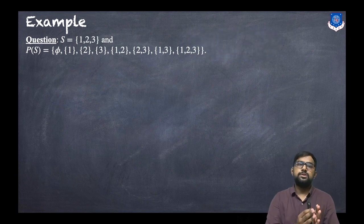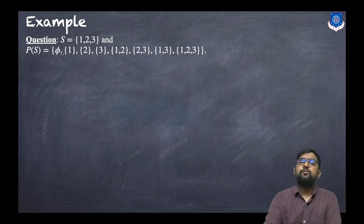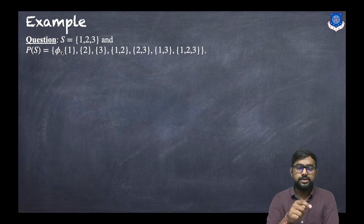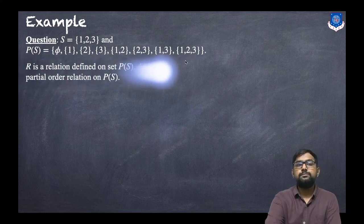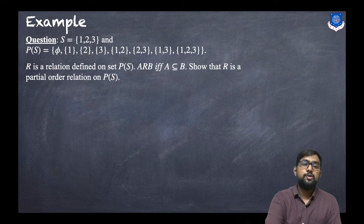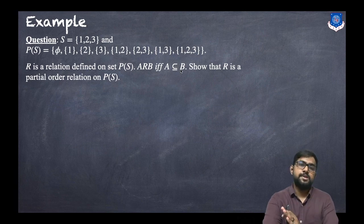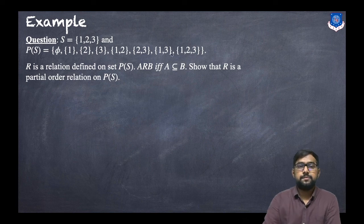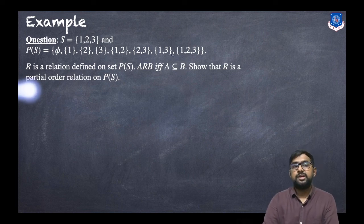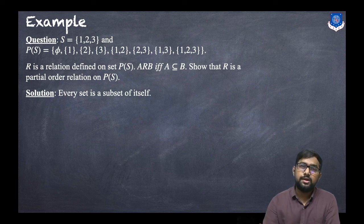The next example: let S = {1, 2, 3} and P(S) be the power set of S. P(S) contains 2 raised to 3, that is 8 elements: the empty set, singletons {1}, {2}, {3}, then {1,2}, {2,3}, {1,3}, and {1,2,3}. R is a relation defined on P(S) where A is related to B if and only if A is a subset of B. Show that it is a partial order relation.